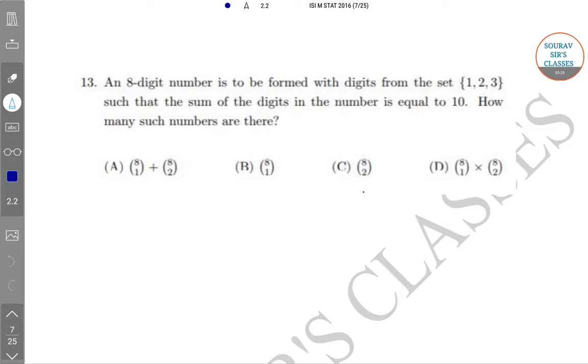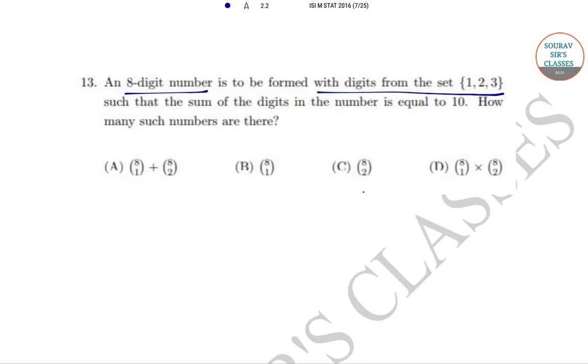In question number 13, an 8-digit number is to be formed with digits from the set {1, 2, 3} such that the sum of the digits in the number is equal to 10. We have to see how many such numbers are possible. The options given are 8C1 plus 8C2, 8C1, 8C2, or 8C1 times 8C2.